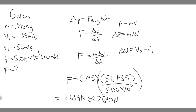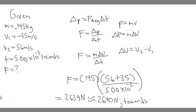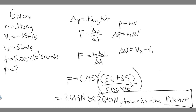We should also specify the direction. The force is going towards the pitcher, because the ball was coming towards the batter and he hits it back at the pitcher. So the answer is 2640 newtons towards the pitcher.